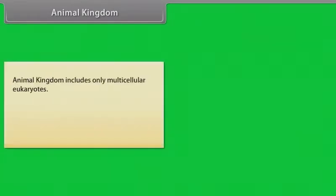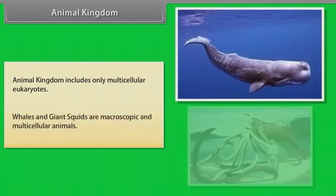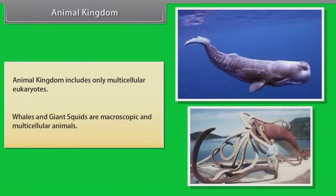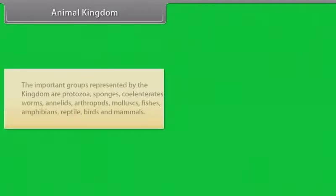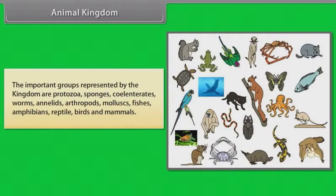The animal kingdom includes only multicellular eukaryotes. Whales and giant squids are macroscopic and multicellular animals. The important groups represented by the kingdom are protozoa, sponges, coelenterates, worms, annelids, arthropods, and mollusks.